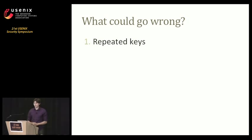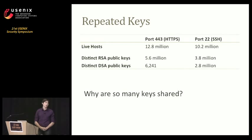So we have this database. But what do we look for? The first obvious thing to look for is repeated keys. From the standpoint of a theoretical cryptographer, we wouldn't expect to see any repeated keys — we'd hope each host presented a unique cryptographic key. But as is very evident, there are far fewer distinct keys than live hosts. In fact, there are less than half.